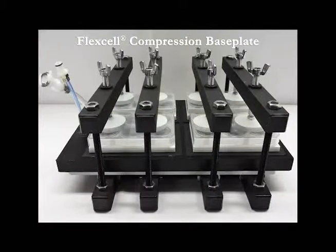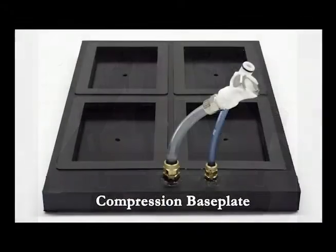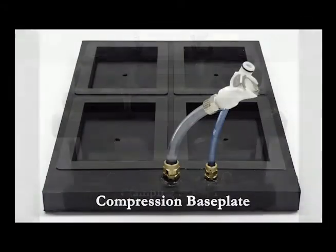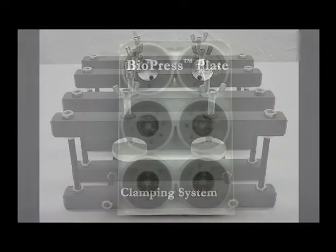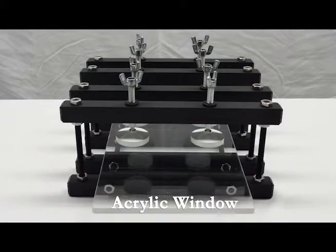To assemble your FlexCell compression base plate for use with six-well Biopress culture plates, you will need your black base plate and attached tubing, the clamping system, four Biopress culture plates, 24 stationary platens, and the supplied acrylic window.